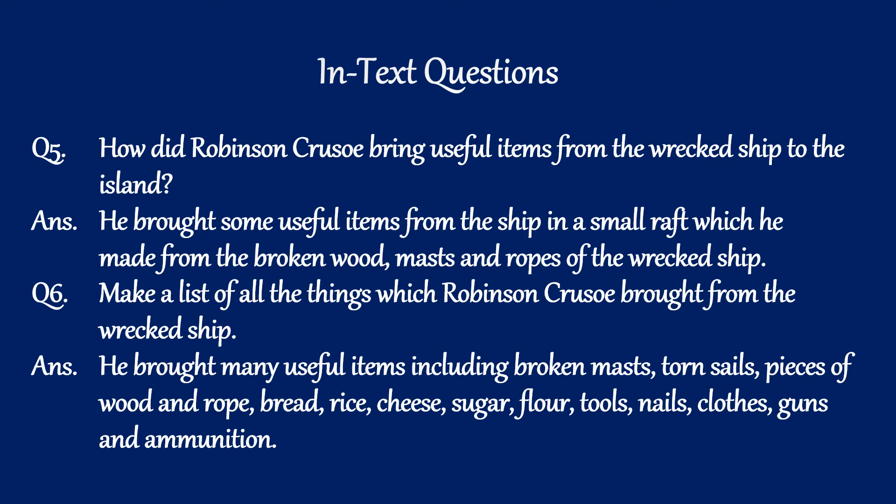Question six: Make a list of all the things which Robinson Crusoe brought from the wrecked ship. Answer: He brought many useful items including broken mast, torn sails, pieces of wood and rope, bread, rice, cheese, sugar, flour, tools, nails, cloths, guns, and ammunition.